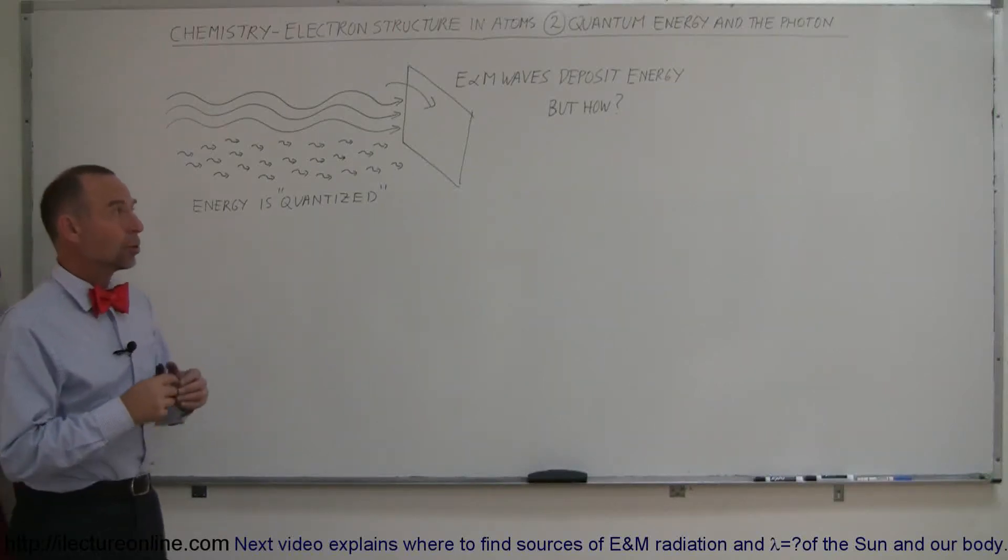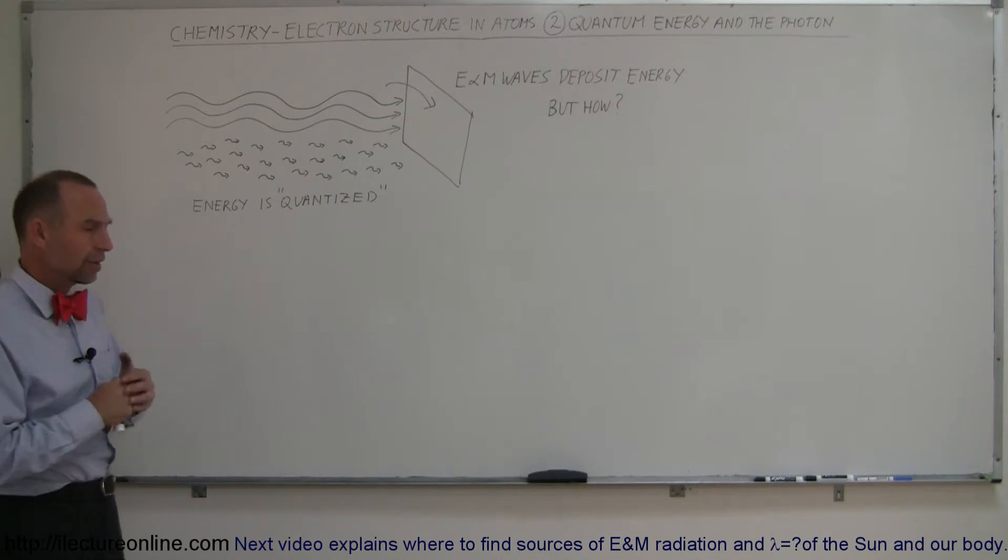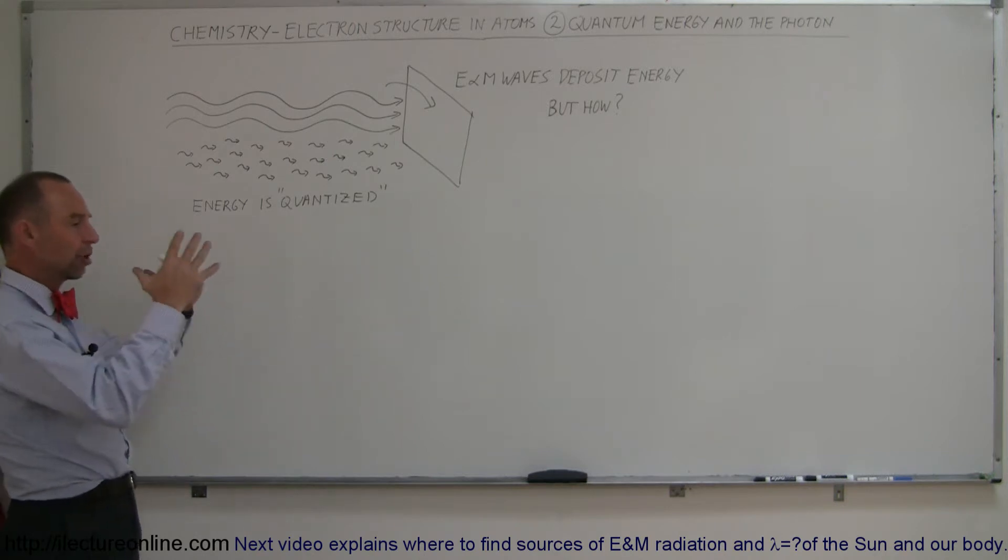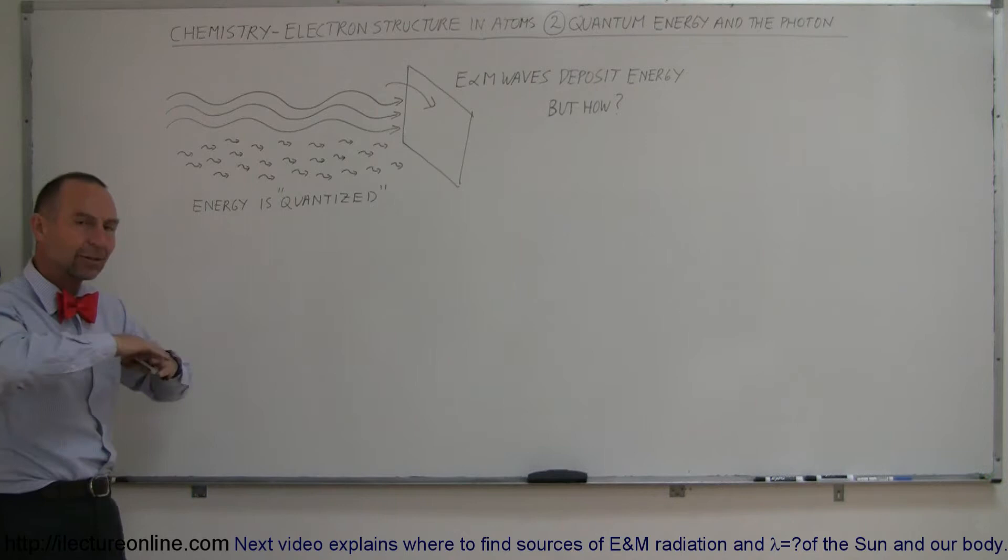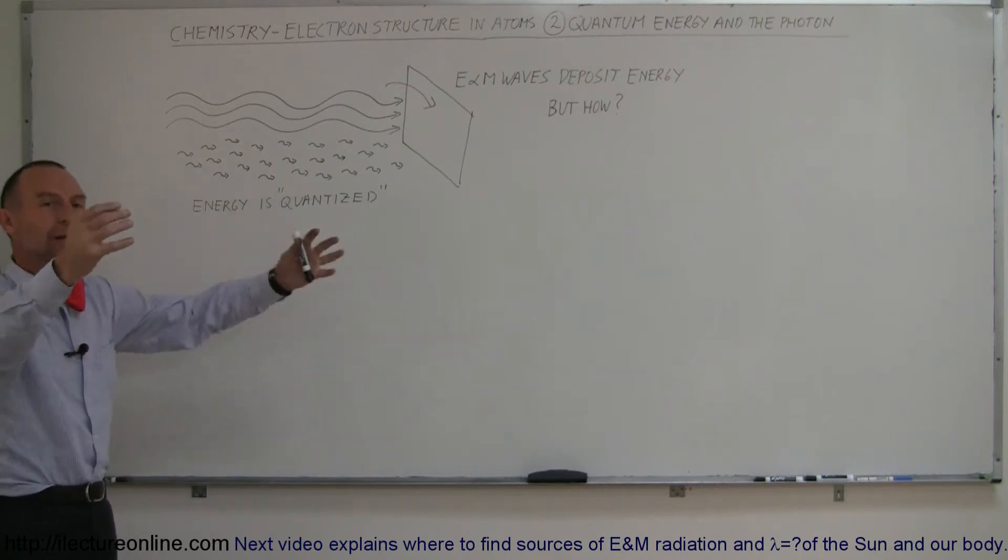Now we're going to take a look at the quantum energy and the photon and what we're dealing with here is the way we want to look at electromagnetic radiation. In the previous video we realized that whenever we have a charged object and we move it back and forth in space or we accelerate it, electromagnetic radiation emanates from that object.